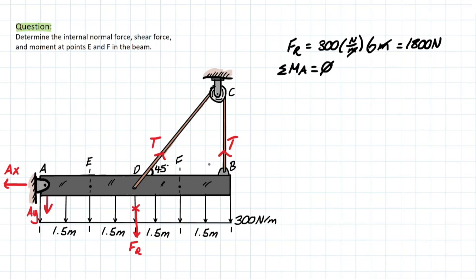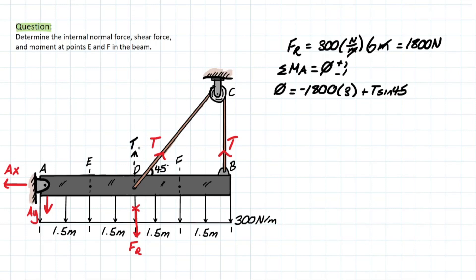Remember, tension is going to be the same in both sections. So we have 0 equal to negative 1800 — negative because it's going clockwise from point A — and we have 3 meters distance from that point. Then we also have the tensile force which is going to be positive, and it's T sine 45 because we're taking that Y component of T. That distance is going to be 3 meters away, and then we also have the tension at the other end which is 6 meters away. Solving for T, we are left with 664.9 newtons.